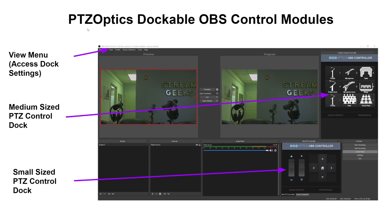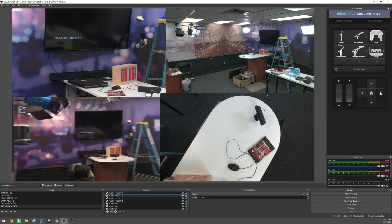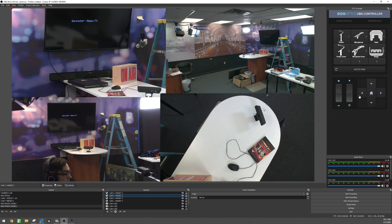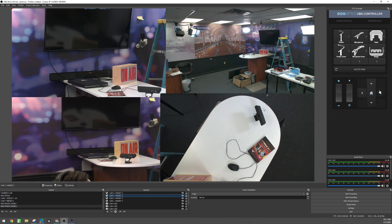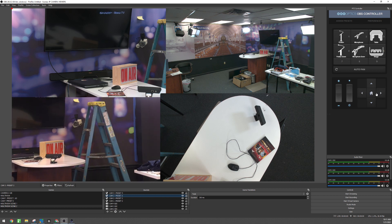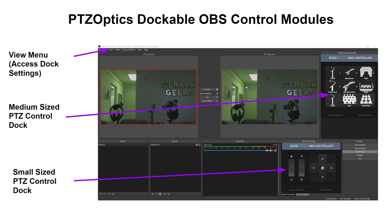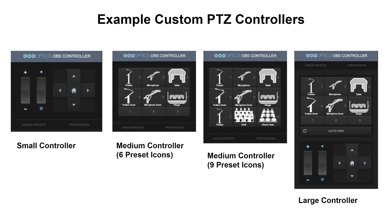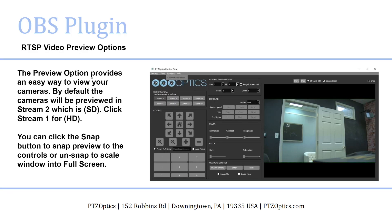Manual control is still great — you're still going to want it for a lot of different reasons. You can put manual control directly into OBS using our dockable plugins. You can put multiple controllers into your OBS — two or three if you'd like. We've got a small joystick controller, a wide medium-sized joystick controller, and a large controller, with options for pan, tilt, zoom, and preset controls. The images inside are totally open source.